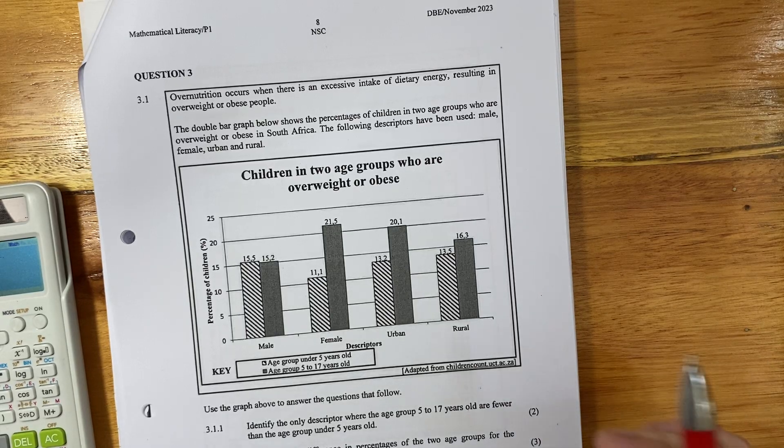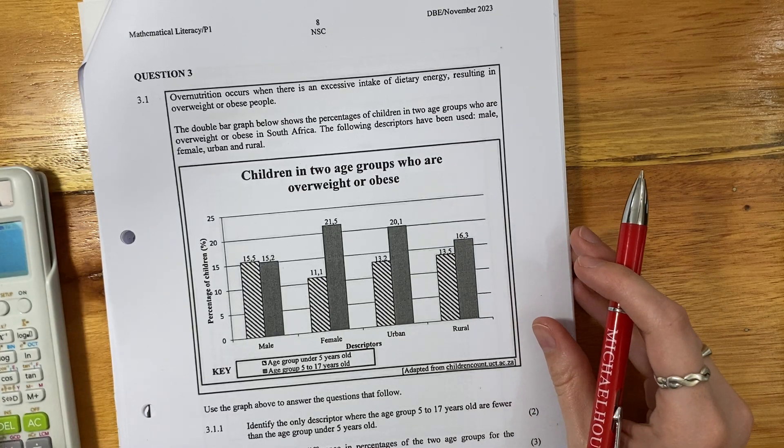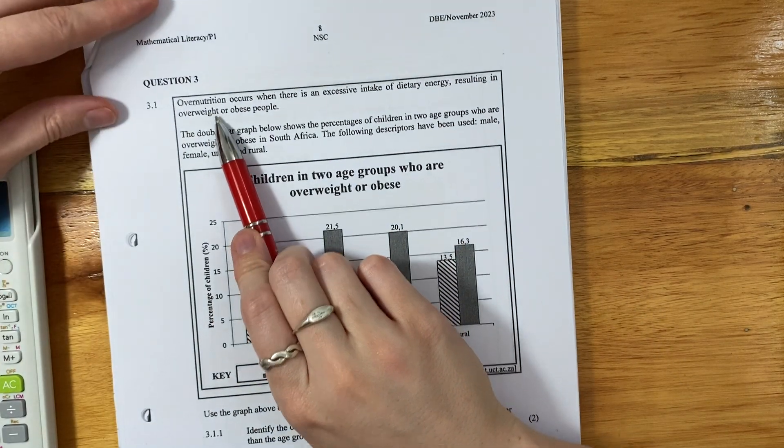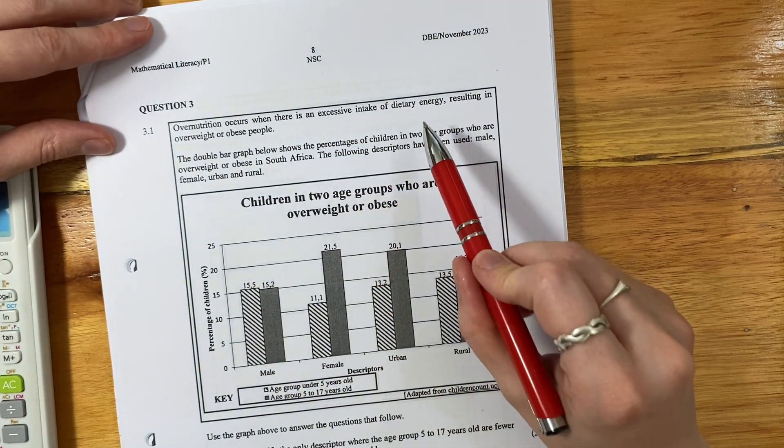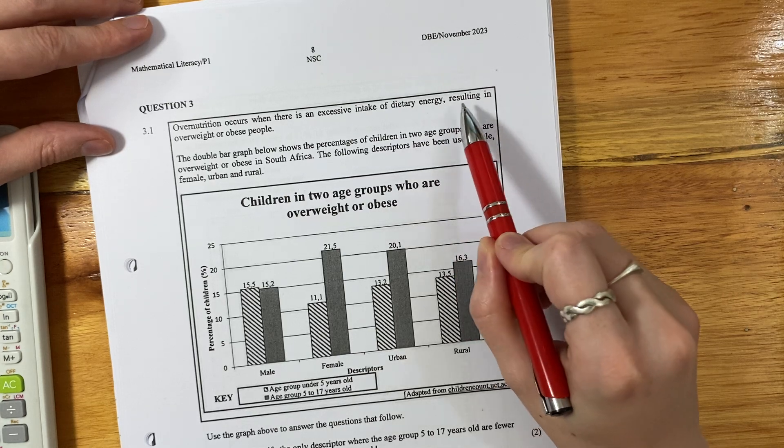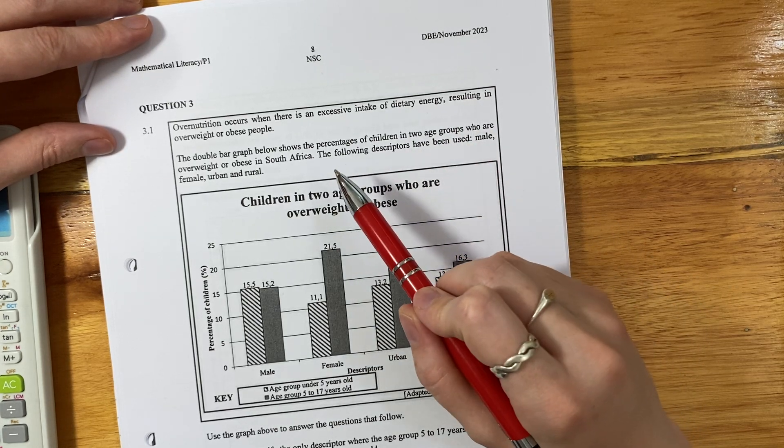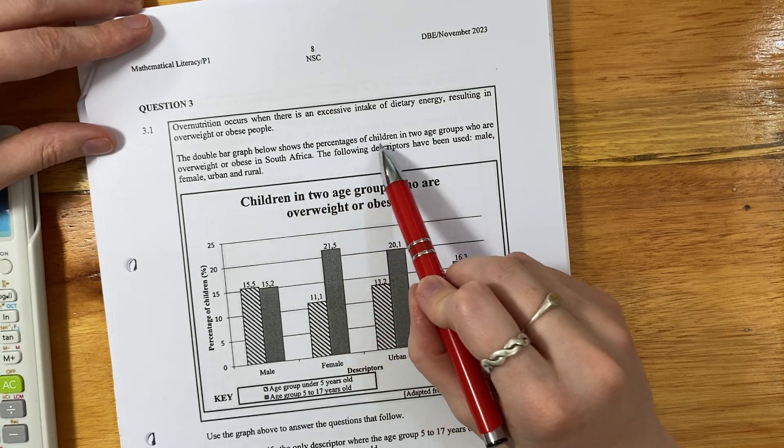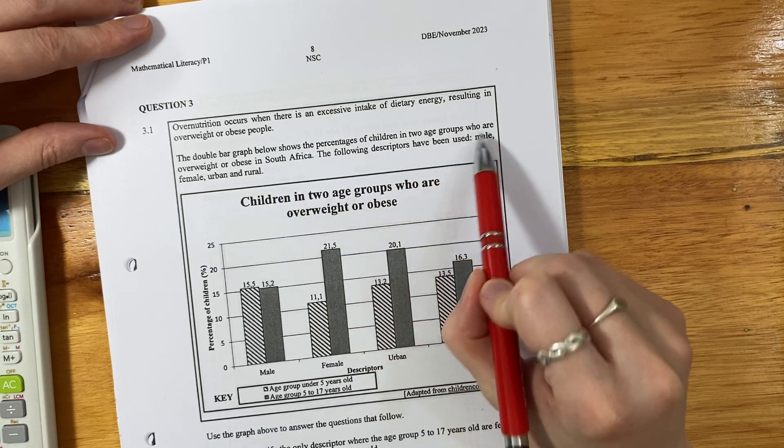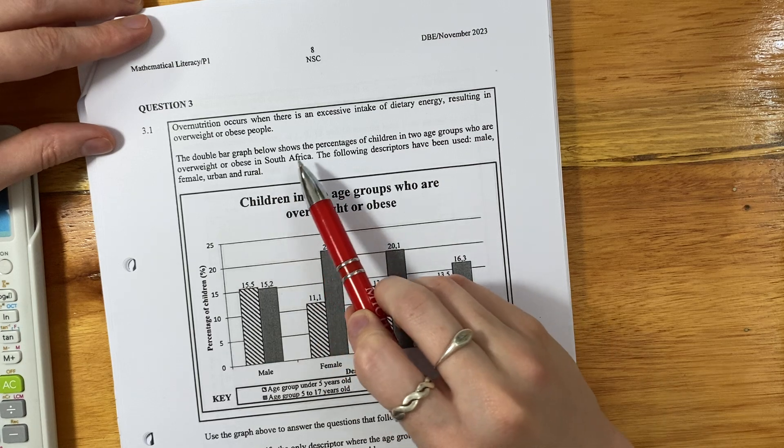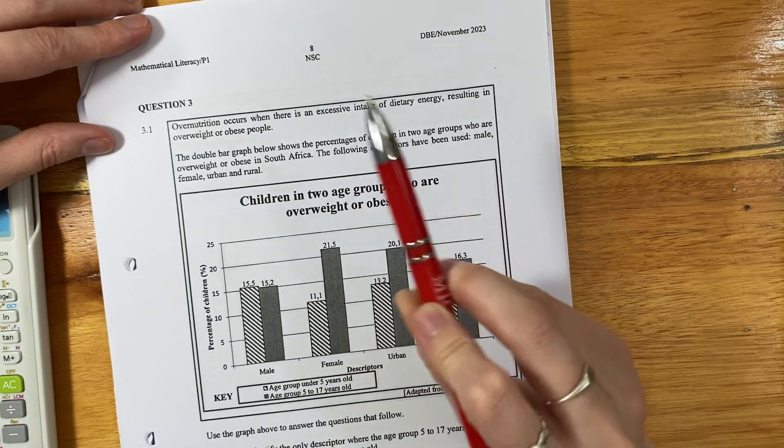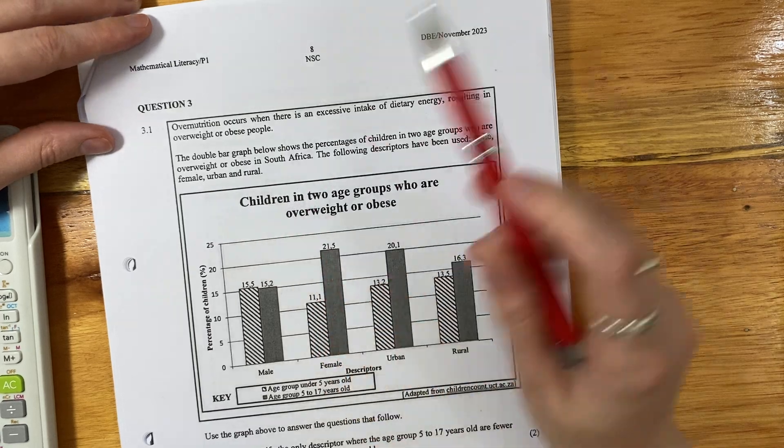Alright, let's look at question three. Question three says over-nutrition occurs when there is an excessive intake of dietary energy, resulting in overweight or obese people. The double bar graph below shows percentages of children in two age groups who are overweight or obese in South Africa. The following descriptors have been used: male, female, urban and rural.